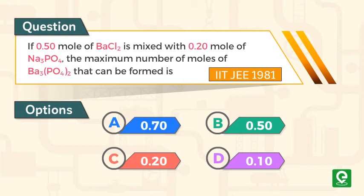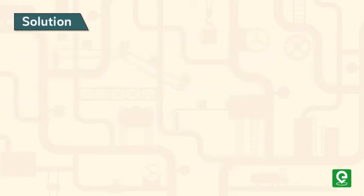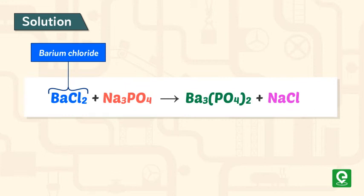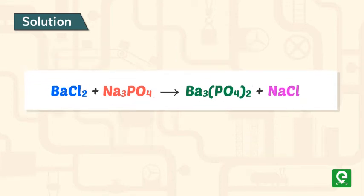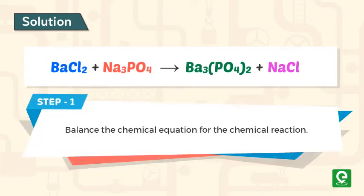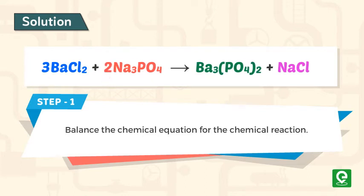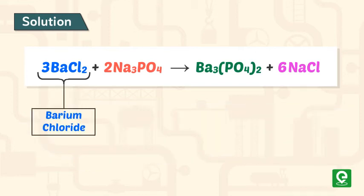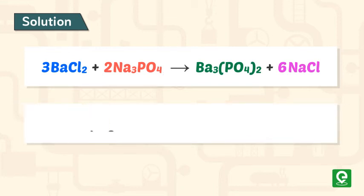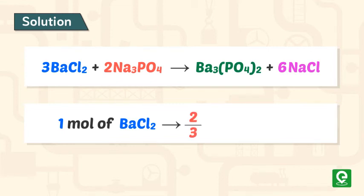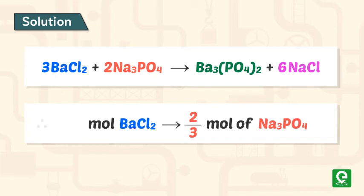Solution: we are given that barium chloride reacts with sodium phosphate to produce barium phosphate and sodium chloride. As step one, let's write the balanced chemical equation: 3 BaCl₂ + 2 Na₃PO₄ → Ba₃(PO₄)₂ + 6 NaCl. In this reaction, 3 moles of BaCl₂ react with 2 moles of Na₃PO₄.